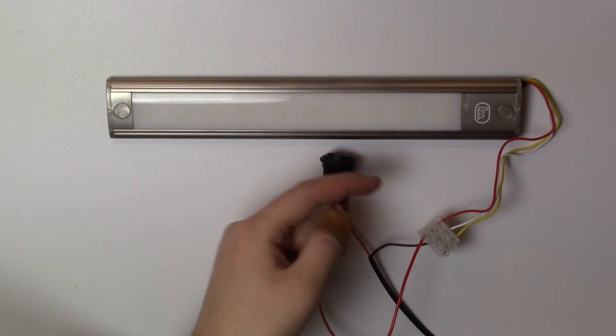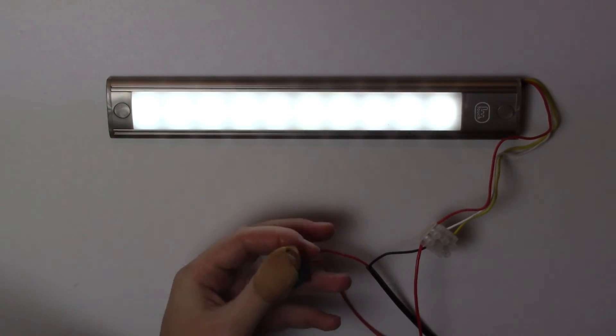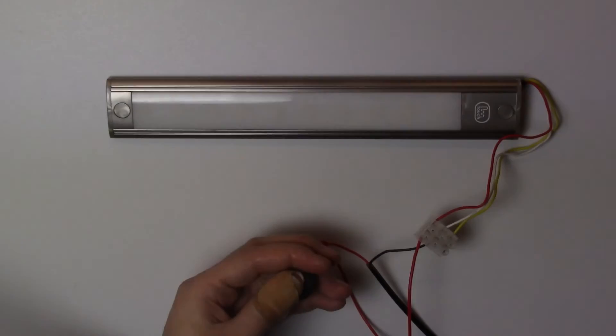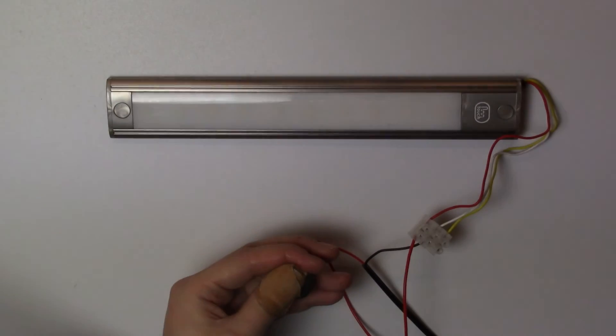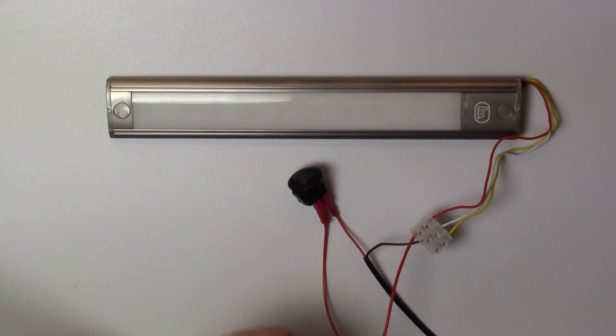Once connected you can use the switch to switch the lights on or off by feeding the constant power through to the light itself. As stated before, if you wish to have the power constantly going through, simply remove the switch from the circuit.